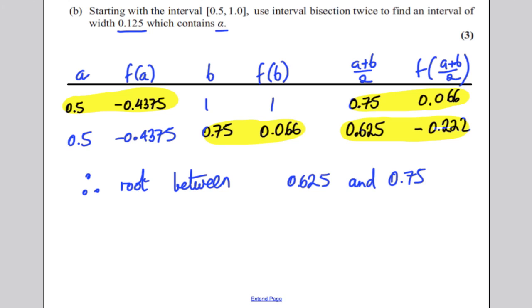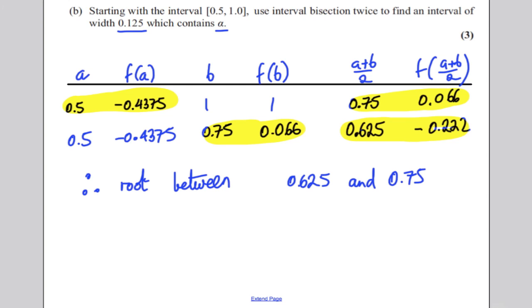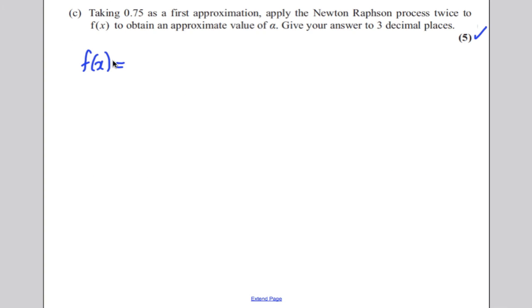Okay, and lastly, part C, by taking 0.75 as the first approximation, apply the Newton-Raphson process twice to f of x to find the approximate value of alpha. Get your easy marks. Firstly, write down your function. Your function f of x from previous work was x to the 4 plus x subtract 1.